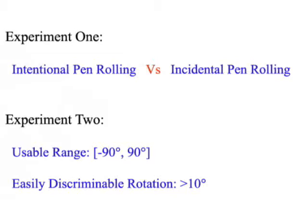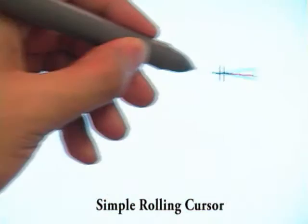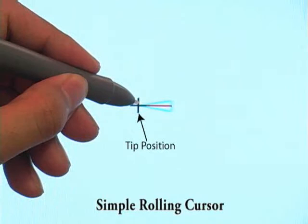The rolling cursor is designed to visualize the rolling angle of a pen. If pen rolling is identified as incidental, the system shows the simple rolling cursor to indicate that rolling-based interaction techniques are not activated. The black cross shows the position of the pen tip, the red rolling line indicates the rolling angle, and the blue sector indicates the angular threshold for identifying incidental pen rolling.